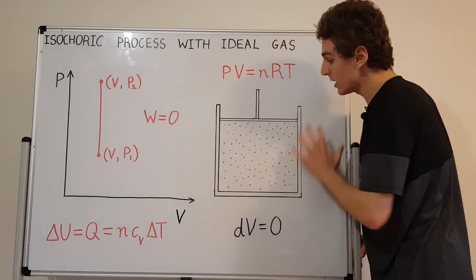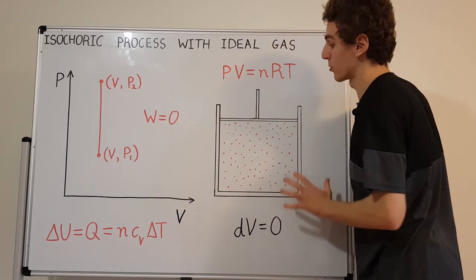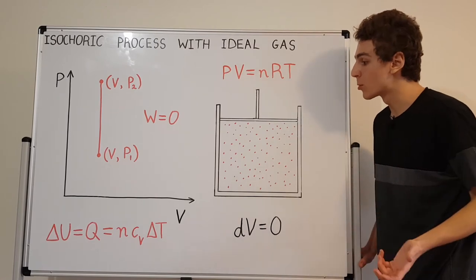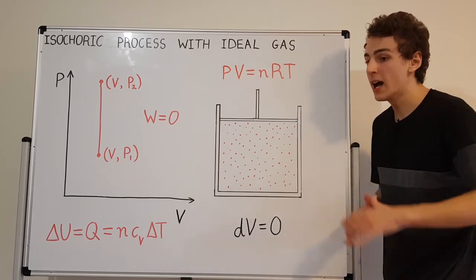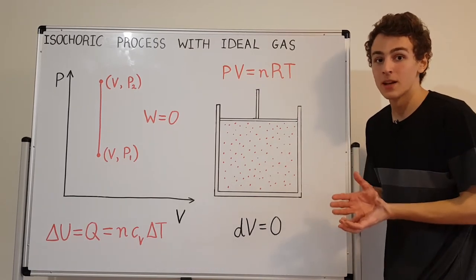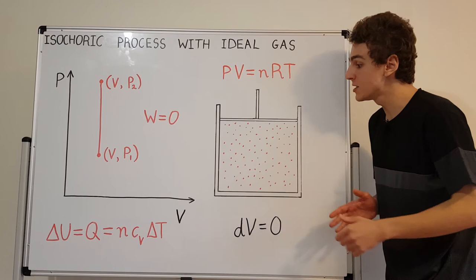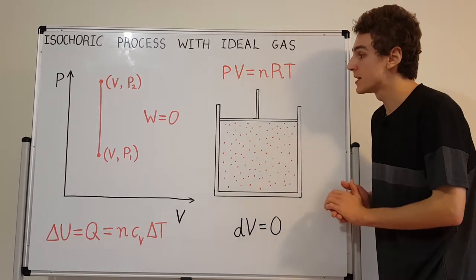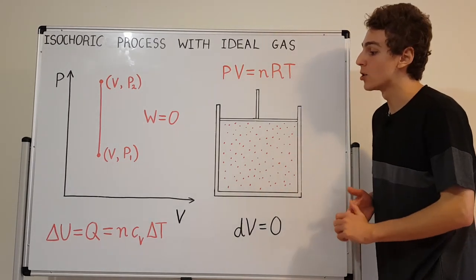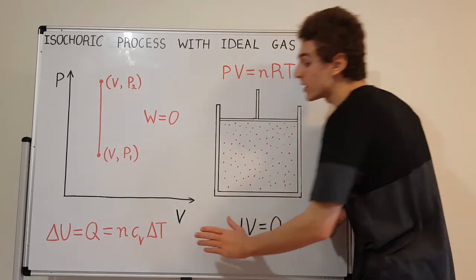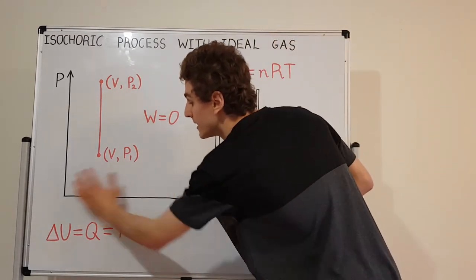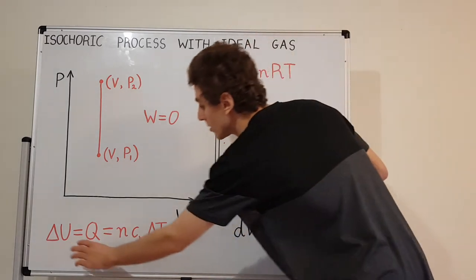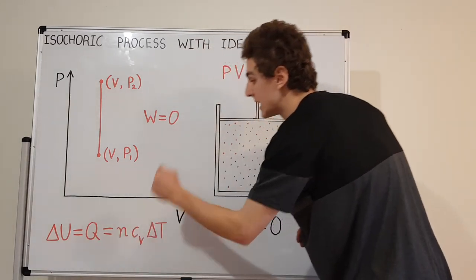If we examine this process in real life, a lot of real-world systems have rigid containers. You could generalize this to systems that aren't even gases. Isochoric processes have a lot of applications, so it's important to recognize this relationship. This is specifically for ideal gases, so this delta U equals Q.